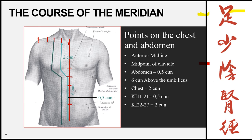For reference, the stomach meridian on the torso is located 4 cun lateral to the midline on the chest and 2 cun lateral to the midline on the abdomen. The spleen meridian sits at 4 cun lateral to the midline on the abdomen and 6 cun lateral to the midline on the chest.